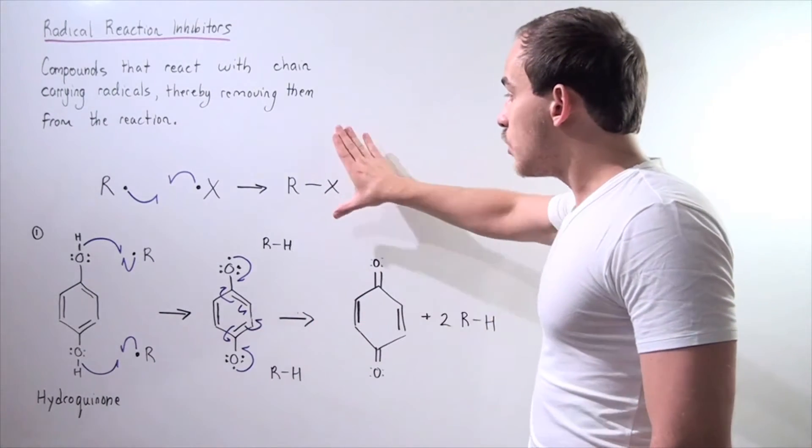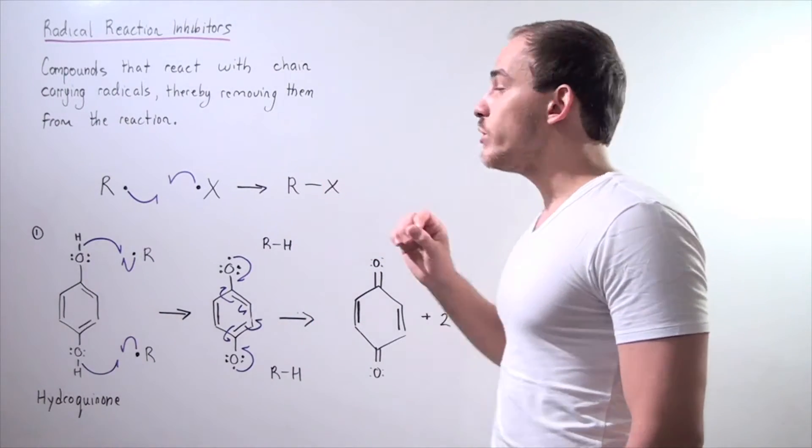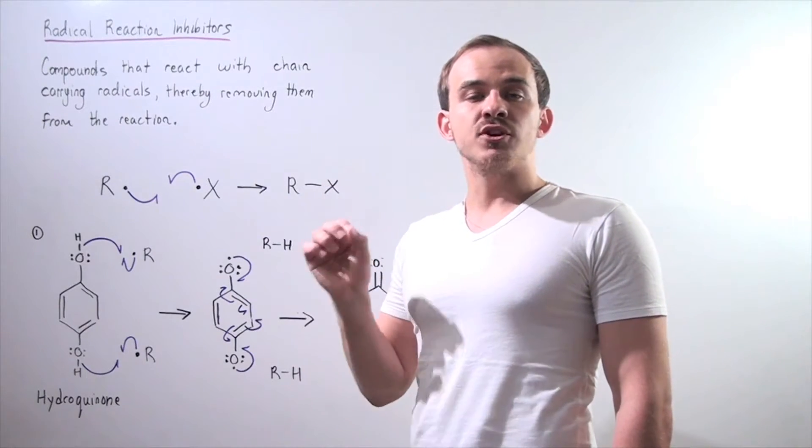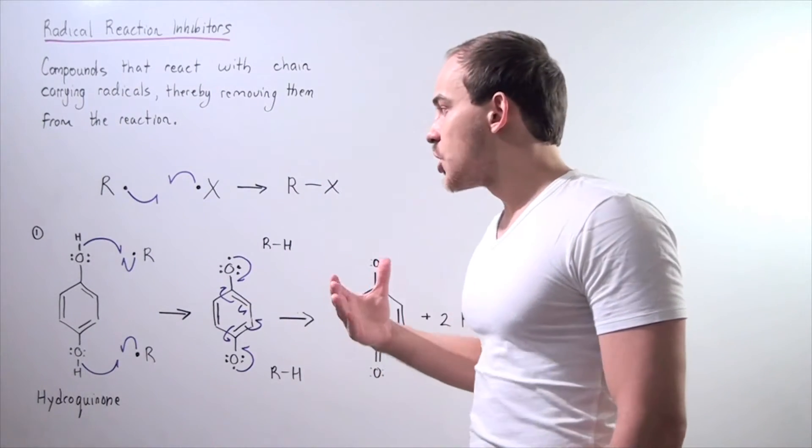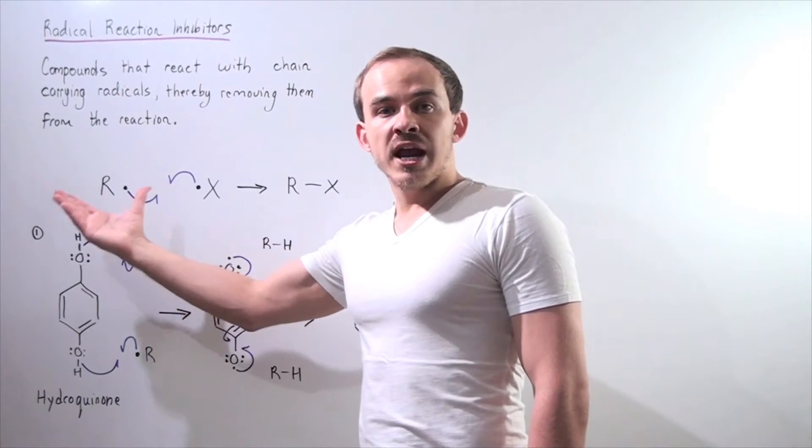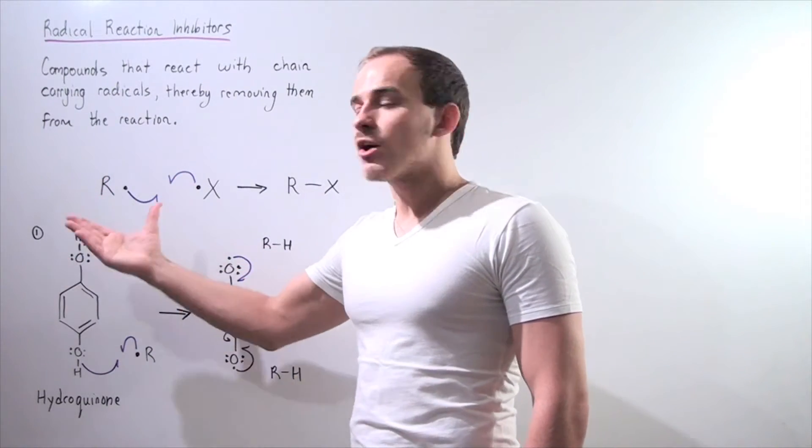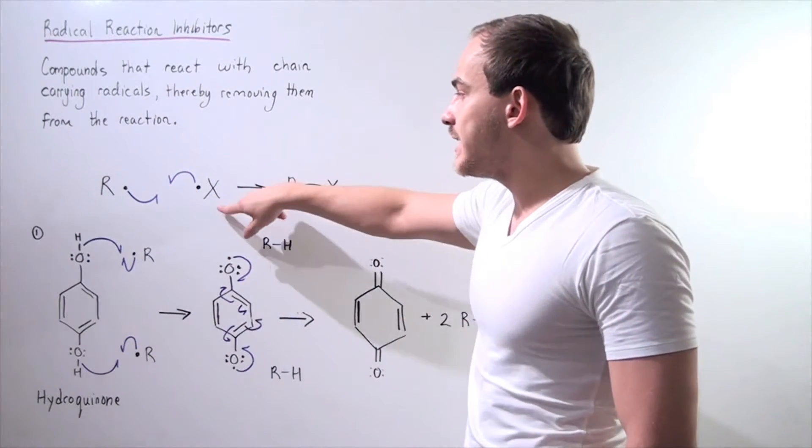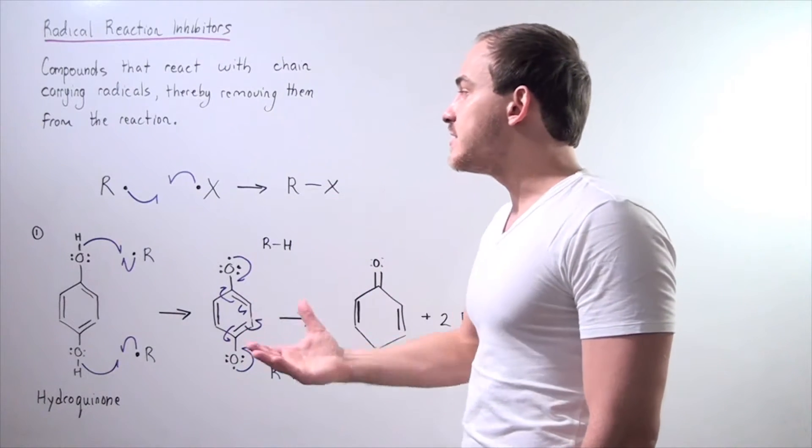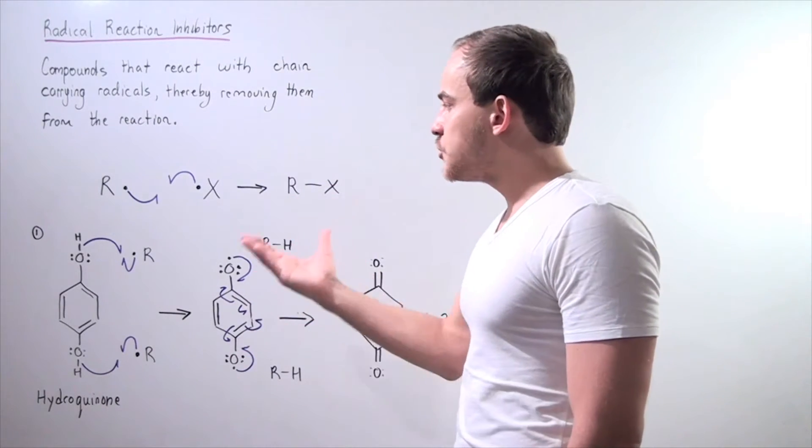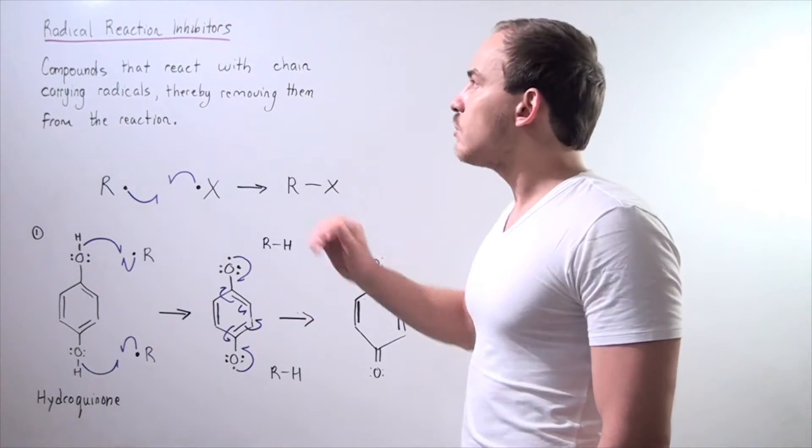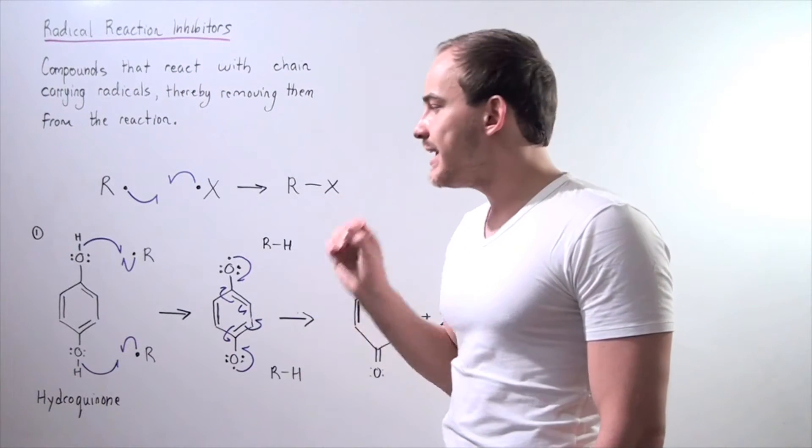Notice that on the product side, we have no chain-carrying radicals. In other words, we remove all the chain-carrying radicals from our radical reaction with this inhibitor. And that means since we no longer have our chain-carrying radicals, our radical reaction is inhibited.